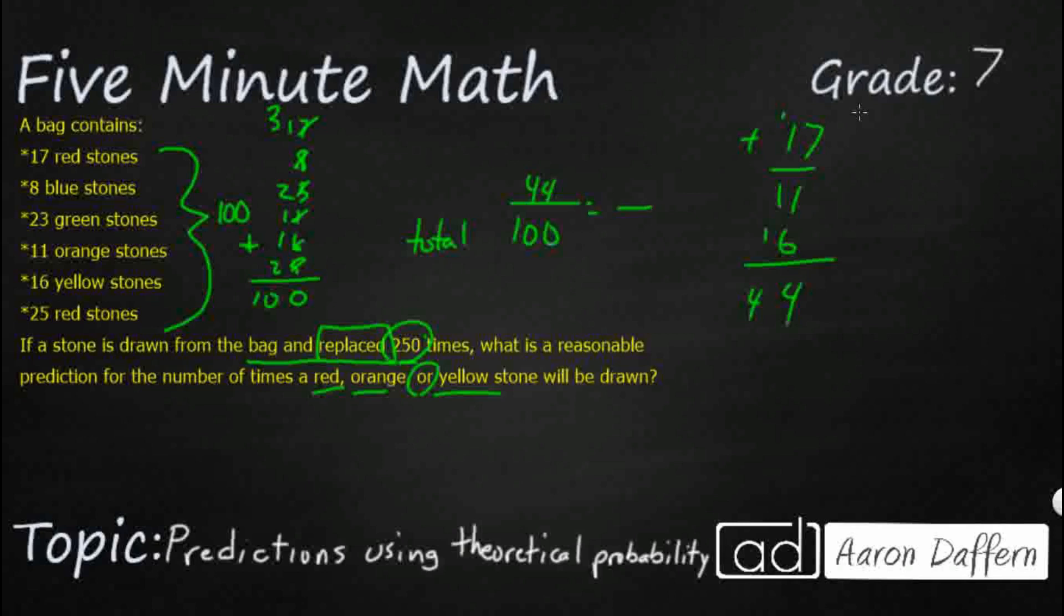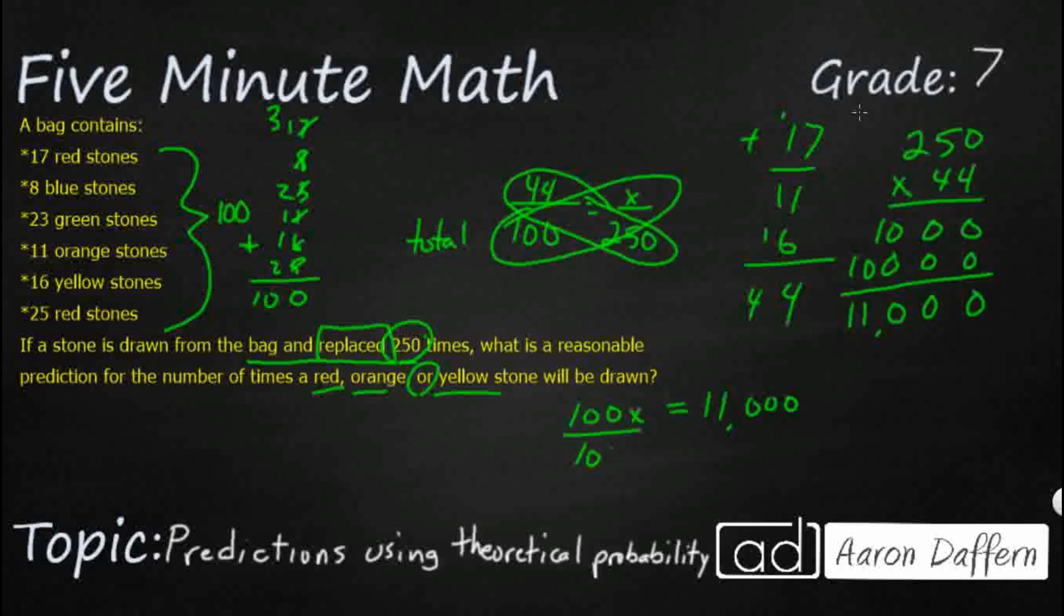I'm going to draw it 250 times. Let's do a little cross multiplication. So if I work this out, I get 100x equals 11,000. Divide both sides by 100. Cross off two zeros, and I'm going to get 110.